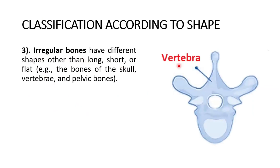Then the irregular bone — vertebra is an example. They have different shapes other than long, short, or flat. Examples include bones of the skull, vertebrae, and pelvic bones. The hip bones are also irregular, and the vertebra is a typical example.